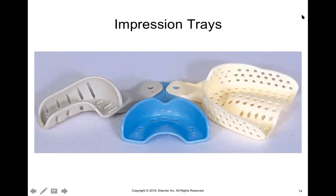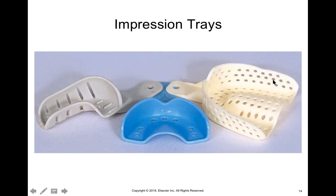Here in this picture, the gray tray on the side is a quadrant tray. The one in the middle is what we call a sectional tray — you would use this for just the anterior teeth, canine to canine. And on the right is the full tray that you can use for an entire arch.